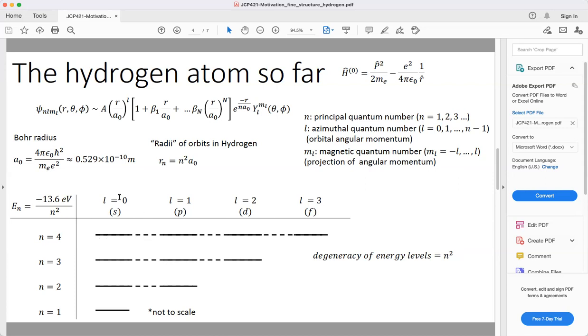The curious thing about this spectrum is that, despite having two additional quantum numbers, the energy only depends on the principal quantum number. This results in a huge degeneracy of the energy levels that scales as n squared.